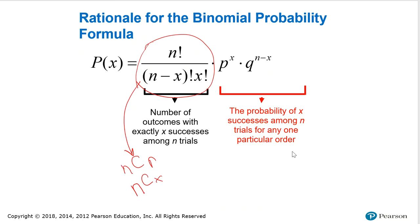The other part of the binomial probability formula is this product where this is the probability of x successes among n trials for any one particular order, for any one particular item within the trials that you're selecting from.